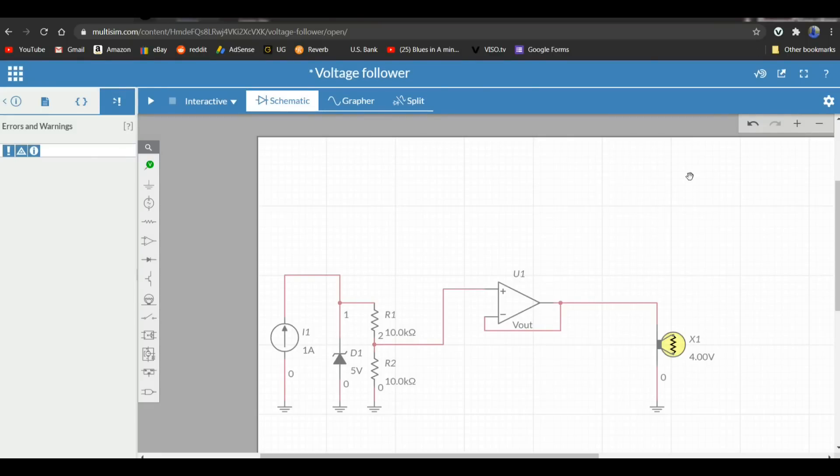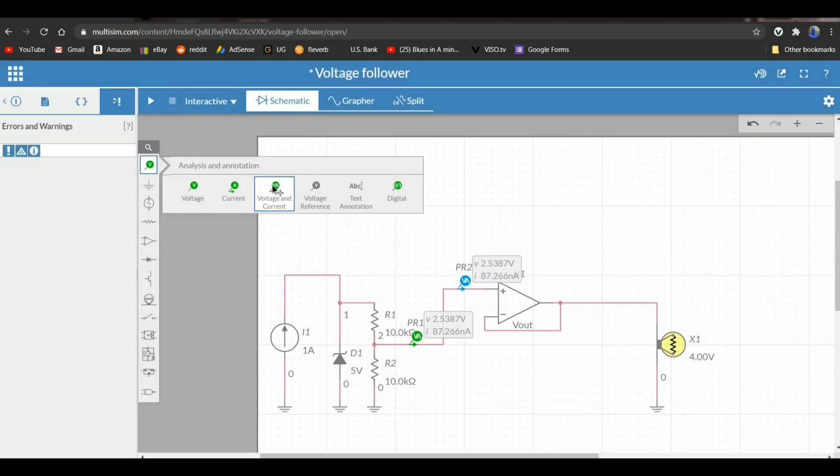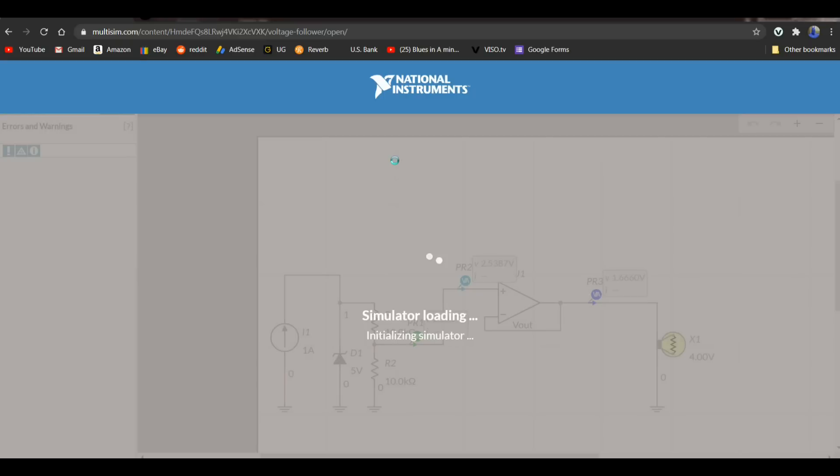All right so we've got our circuit drawn up here in multi-sim. And if you take a look we have our power section here, there's our zener, there's our source, there's our voltage divider, then we have our voltage follower here and then we have a lamp over here. So if we put some voltage and current on here, we want to see here's our output, here's our input, and there's the output there. So if we run our simulator...